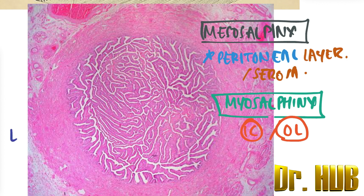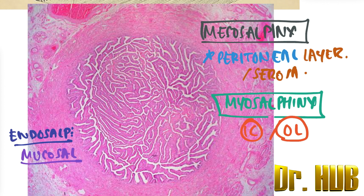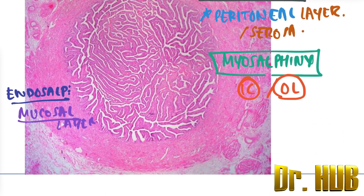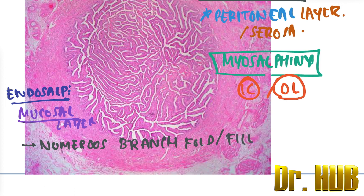The innermost layer is the endosalpinx, which is the mucosal layer. It features numerous branching folds that fill the entire lumen.